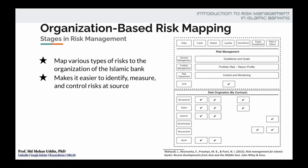In the figure you can see — this is just an example; the risk mapping does not have to be exactly like this. In the bottom part, different Islamic banking contracts are listed, and the column headings are different types of risk: credit risk, market risk, liquidity risk, operational risk, equity investment risk, and rate of return risk.